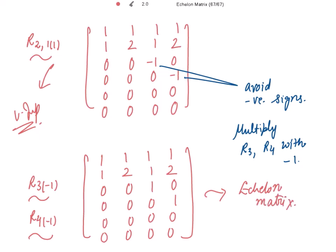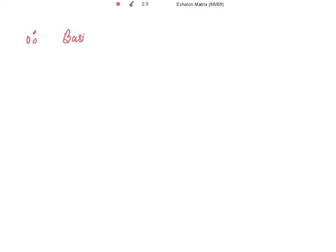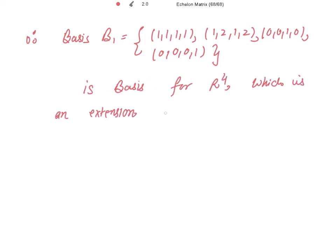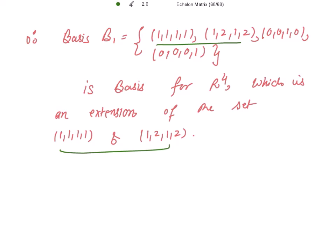How many non-zero rows are there? We are having 4 non-zero rows. So therefore, the basis B1 becomes {1,1,1,1} and {1,2,1,2} — the two vectors given to us — and extending these vectors, the next vectors are {0,0,1,0} and {0,0,0,1}. So this is the basis of R4, which is an extension of the set {1,1,1,1} and {1,2,1,2}. These vectors in the basis should match with the given vectors. Thank you.